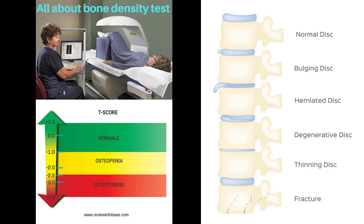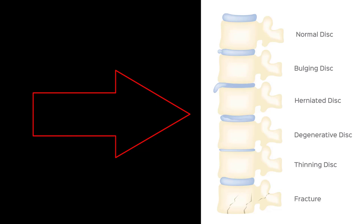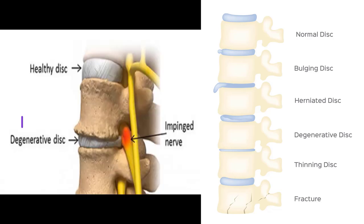Instead of just saying metabolic disorders, osteoporosis, or degenerative osteoarthritis, let's look at the actual functionality of the bone in the spine and see what happens and what we are measuring. We'll look at a normal disk space, and then a bulging disk, herniated disk, degenerative disk, thinning disk, and a fracture. We need to see what is actually happening that we are recording when we take our scans.